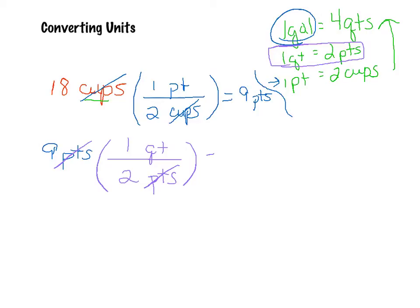So, in dividing this, I'm going to end up, or in multiplying this out, I have the nine over one. Nine times one is nine, divided by two is going to be 4.5 quarts.